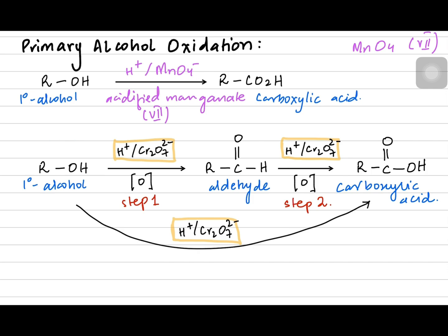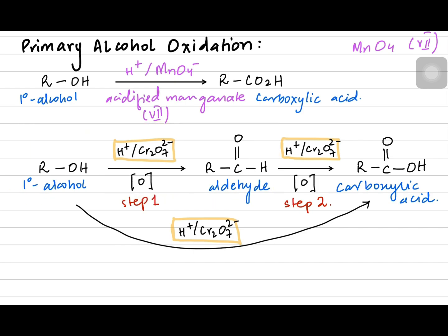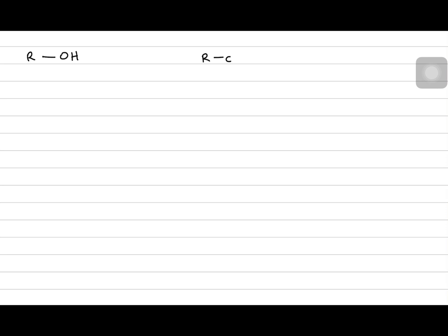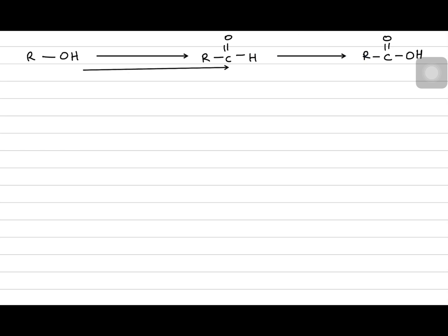What controls whether we make aldehyde or carboxylic acid? It depends on the conditions — the environment and experimental setup control this. Starting from a primary alcohol, we can get aldehyde or carboxylic acid depending on conditions. I'm drawing an arrow from the alcohol to the aldehyde, then to the acid, or directly from the alcohol to the acid.